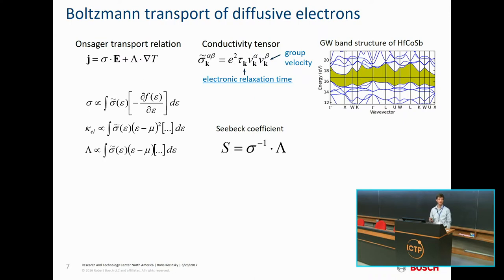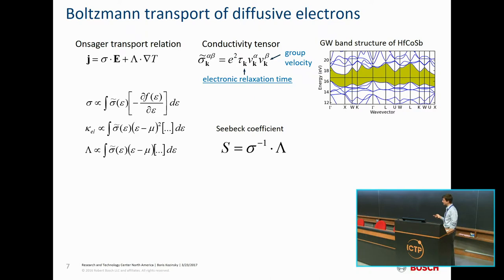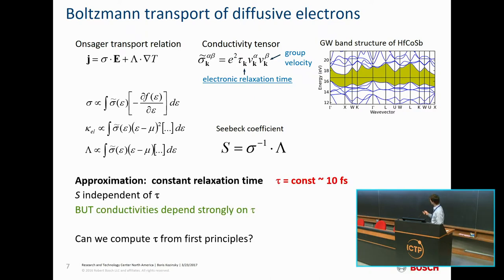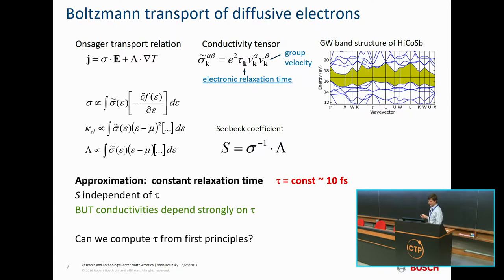The lifetime of the electron actually enters as a proportionality constant in the electronic conductivity, so we need to estimate it to predict thermoelectric performance. This wasn't done before because it's very difficult — you need to know the scattering mechanisms, which is way beyond just band structure calculations. Using a commonly assumed constant relaxation time is really not appropriate for predicting thermoelectric performance: it's okay for Seebeck but not for electronic conductivity. So the idea was to compute it from first principles.